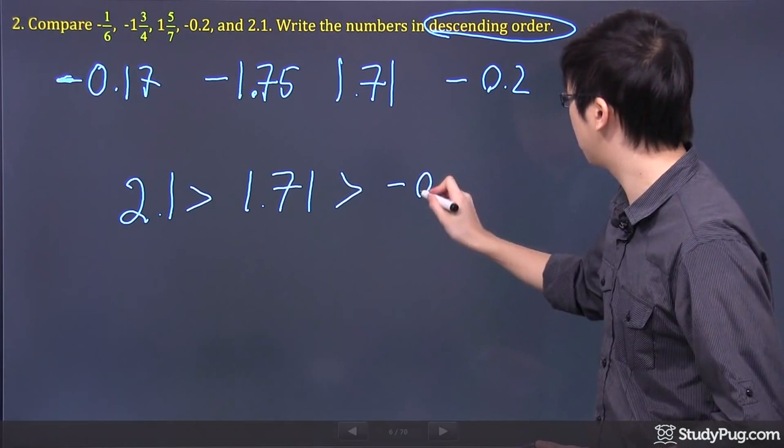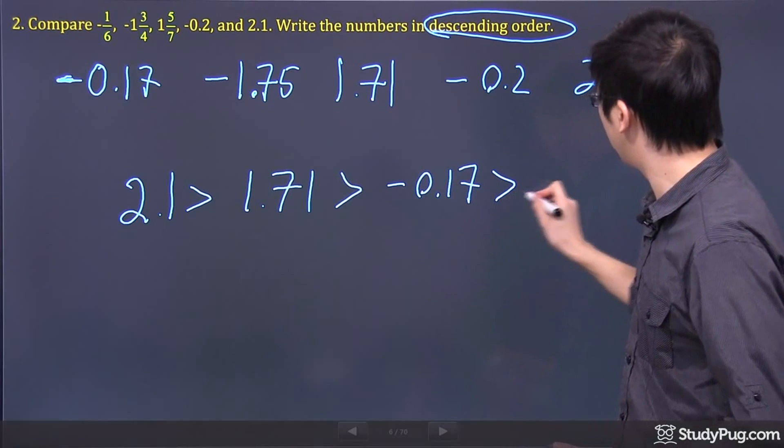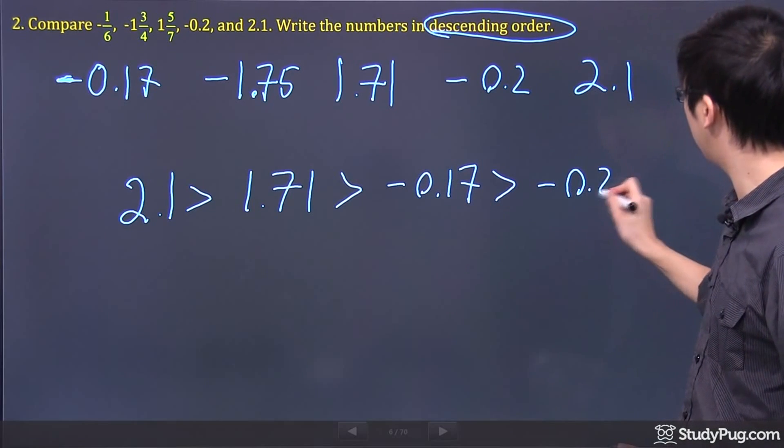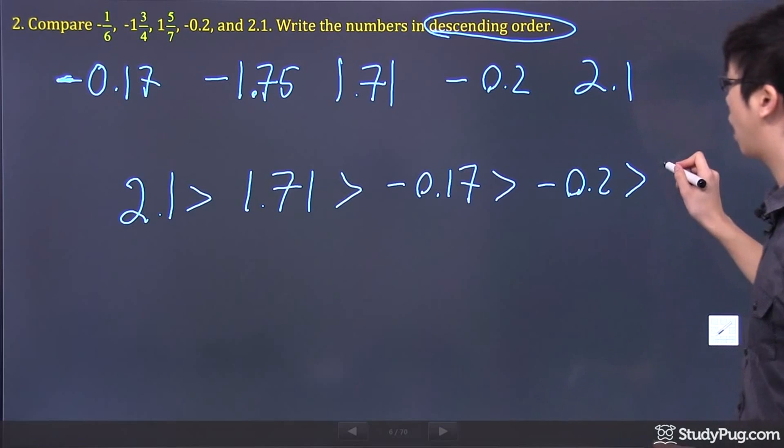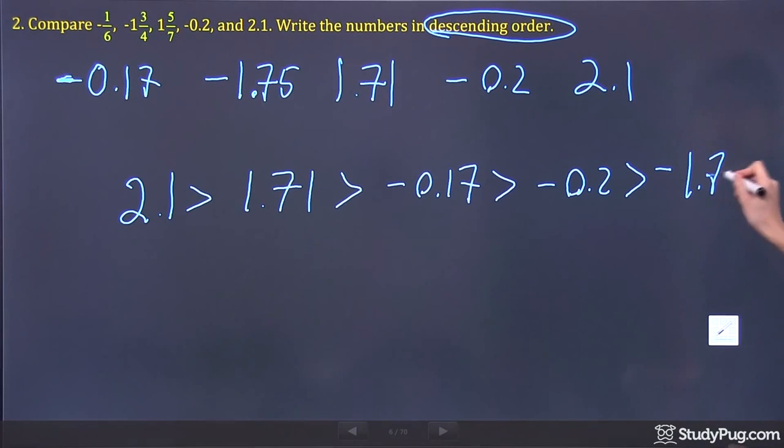So the next one will be negative 0.17 greater than negative 0.2. And the smallest number we have from these five numbers is negative 1.75.